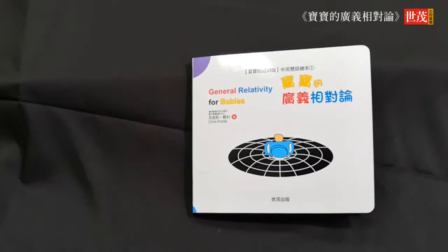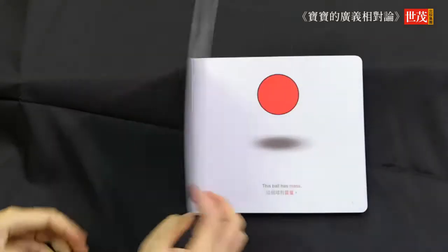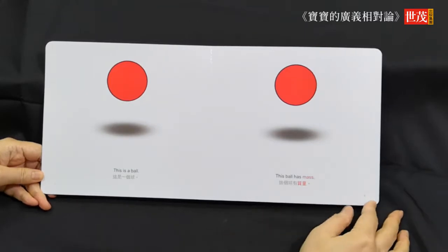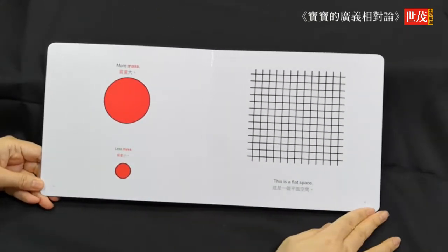General Relativity for Babies by Chris Farrar. This is a ball. This ball has mass. More mass, less mass.